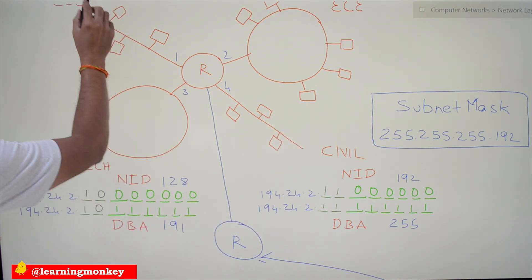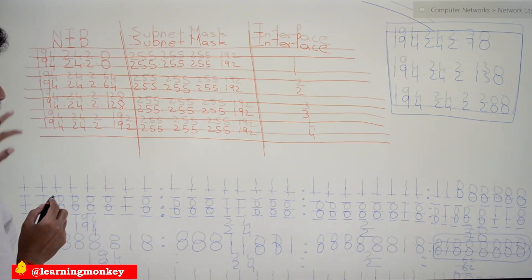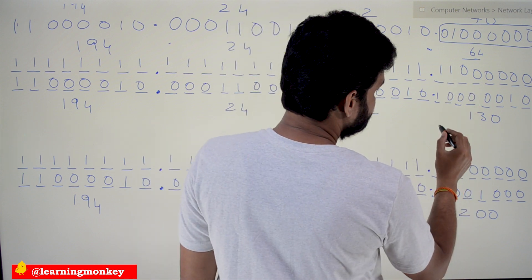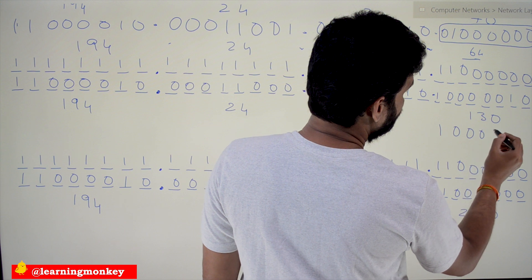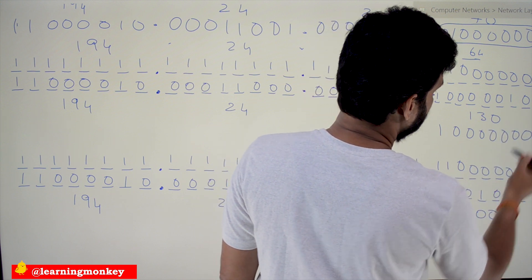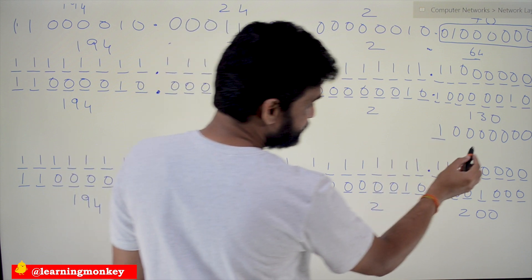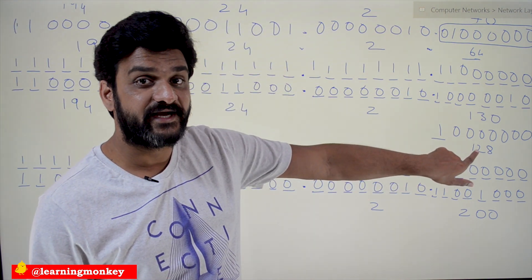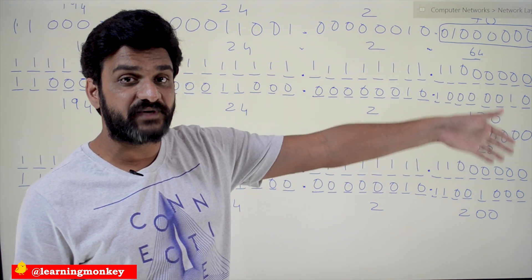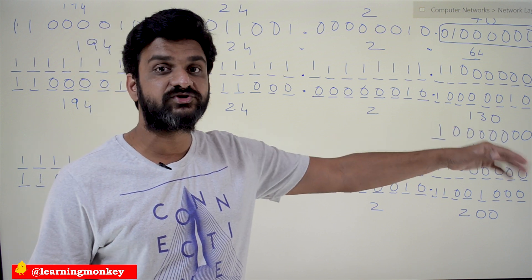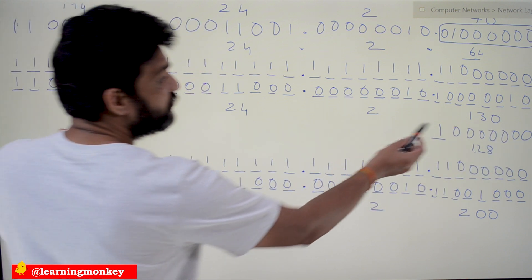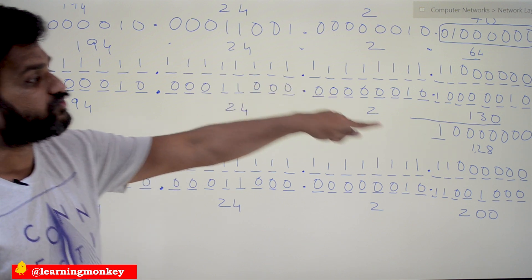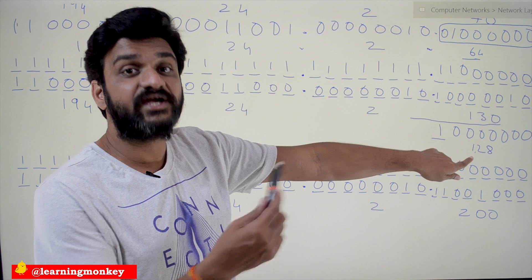Let's check the remaining IP addresses. We are not going to consider the first three octets — let's go directly to the last octet. For 130: in binary it is 1 0 0 0 0 0 1 0. The subnet mask last octet 128 is 1 0 0 0 0 0 0 0. The AND result is 1 0 0 0 0 0 0 0, which is 128. So if the destination address is 194.24.2.130, it has to be transmitted to the network with network ID 194.24.2.128 — interface 3. The packet will be transmitted to the third interface.